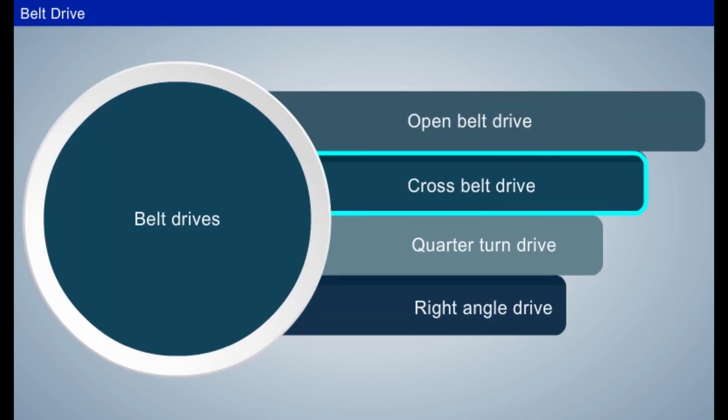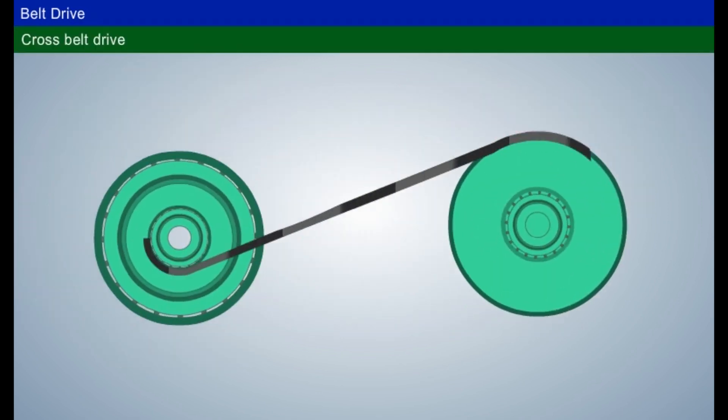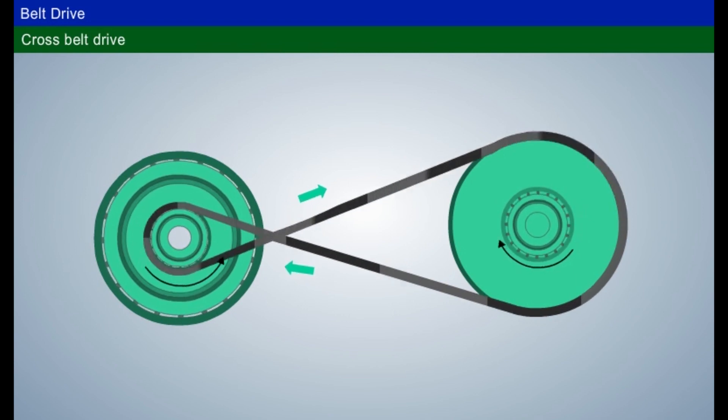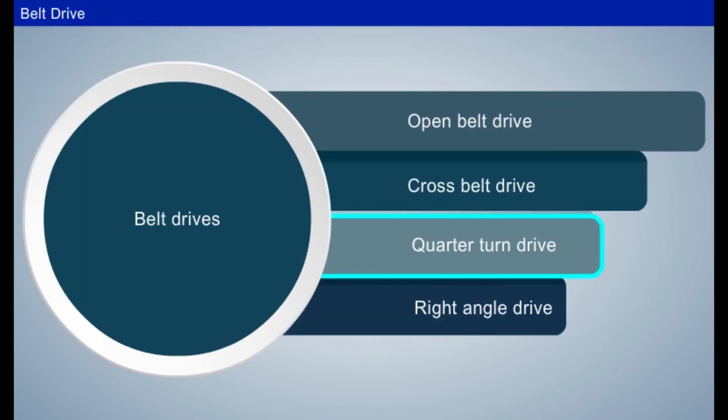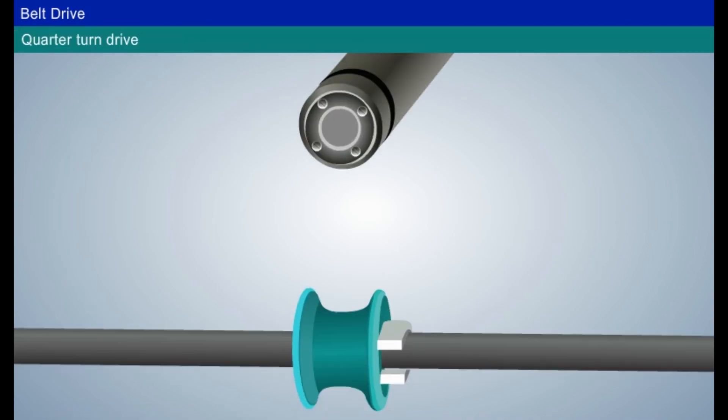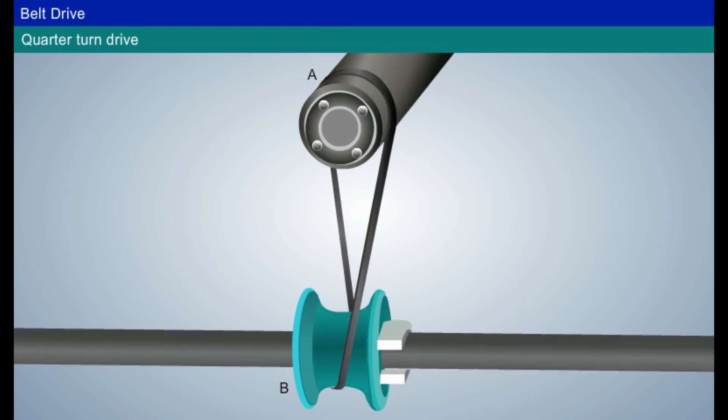Cross belt drive: Two parallel shafts are connected by belt pulleys such that the follower pulley rotates in the opposite direction to that of the driver pulley. Quarter turn drive: Two non-parallel and non-intersecting shafts can be connected by this type of belts and pulleys.